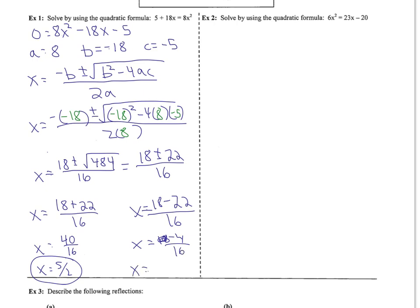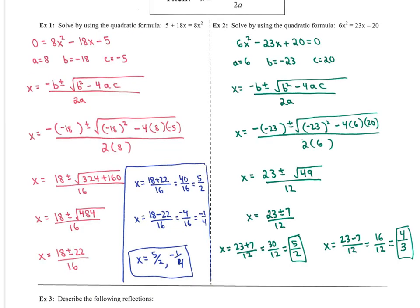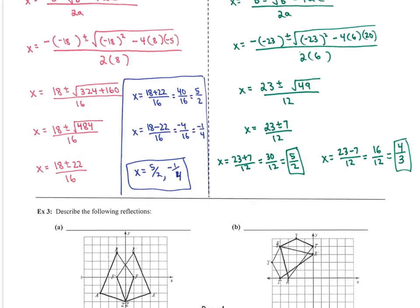Now, pause this and try example 2 by yourselves. For number 2, you should have gotten 5 halves and 4 thirds. You can check your work.